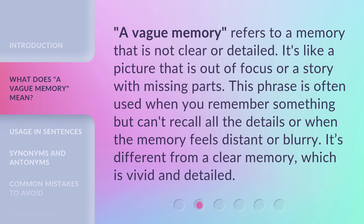A vague memory refers to a memory that is not clear or detailed. It's like a picture that is out of focus or a story with missing parts. This phrase is often used when you remember something but can't recall all the details, or when the memory feels distant or blurry. It's different from a clear memory, which is vivid and detailed.